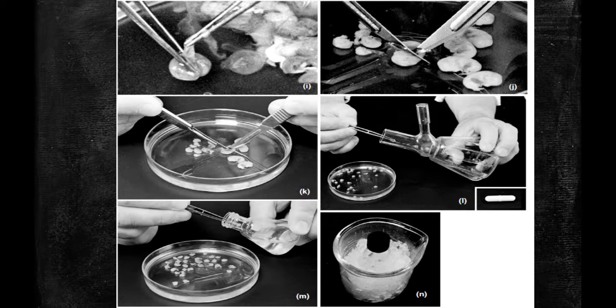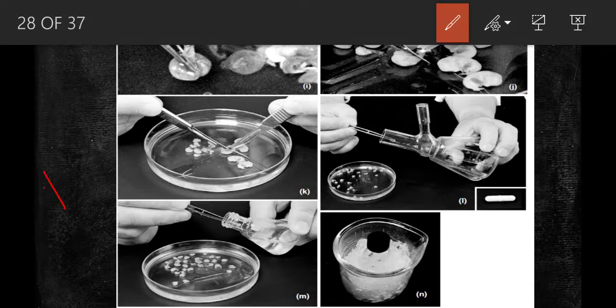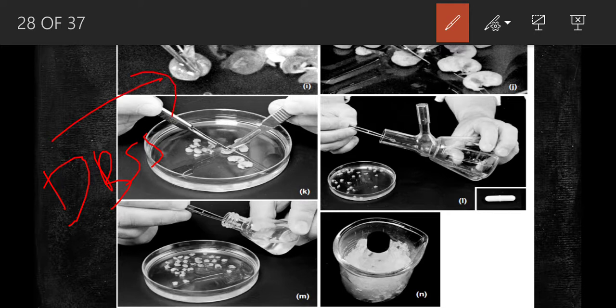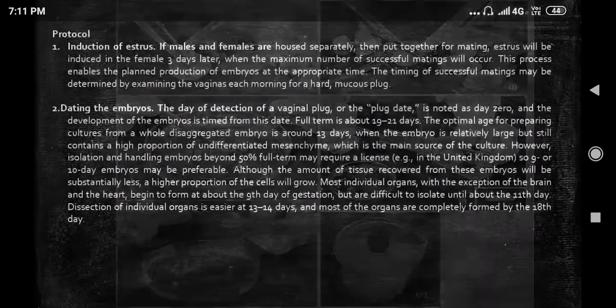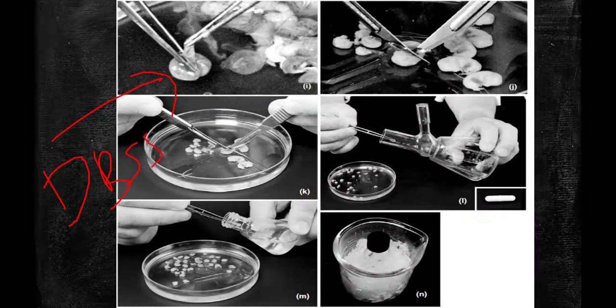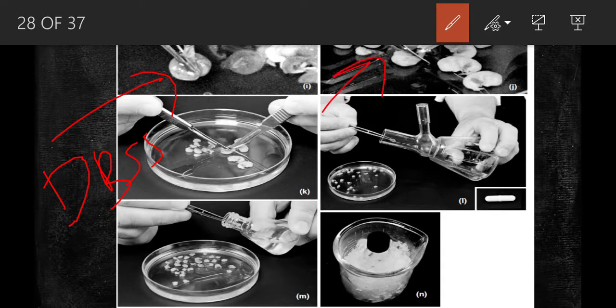Transfer them into the petri dish which contains sterile DBSS medium. You have to dissect out the embryos. While dissecting, there are two steps: first, tear out the uterus with two pairs of sterile forceps.